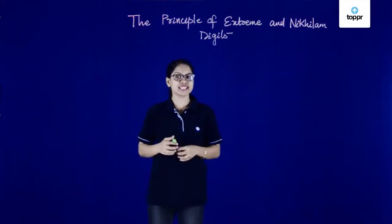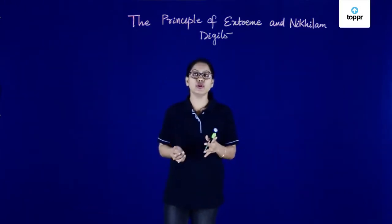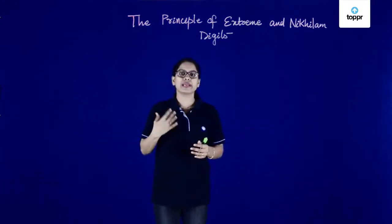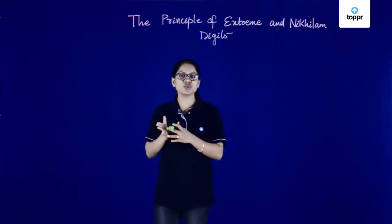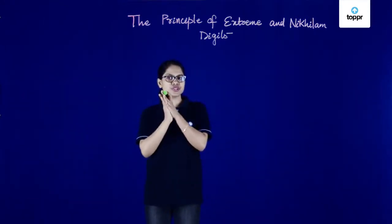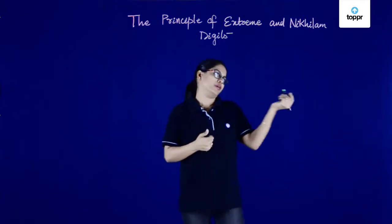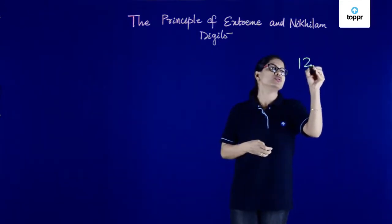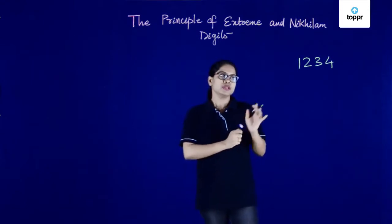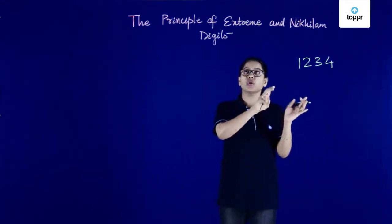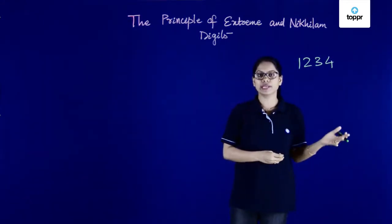Hello students. In today's class we'll be learning the meaning of extreme and nickelam digits in Vedic maths. These are terms used to refer to certain digits in a given number. For example, if we have a number 1234, certain digits are called the extreme digits and certain are called the nickelam digits.